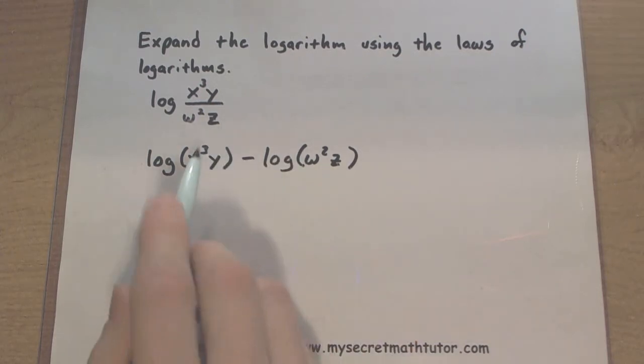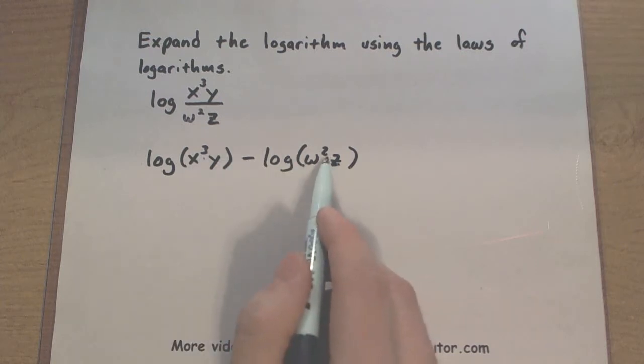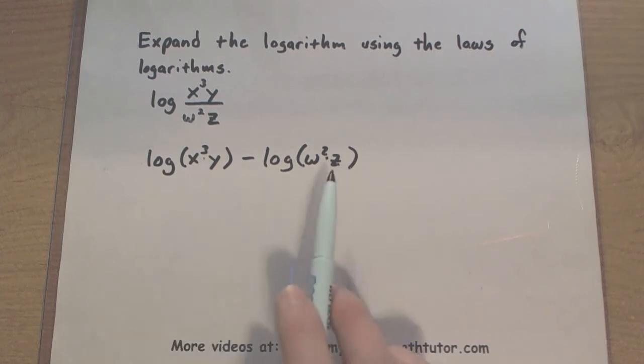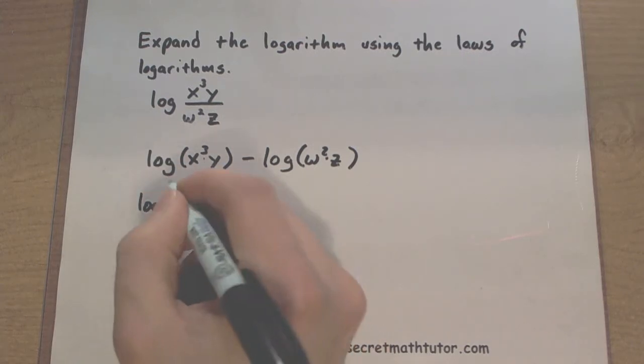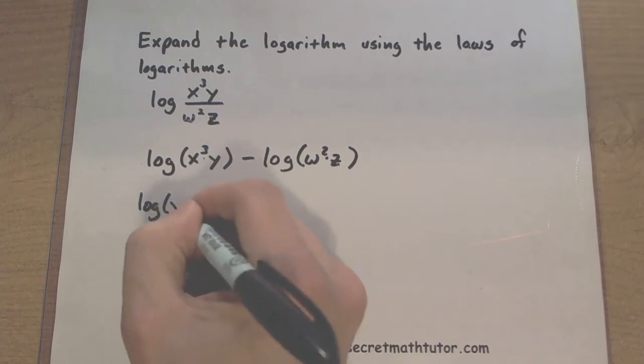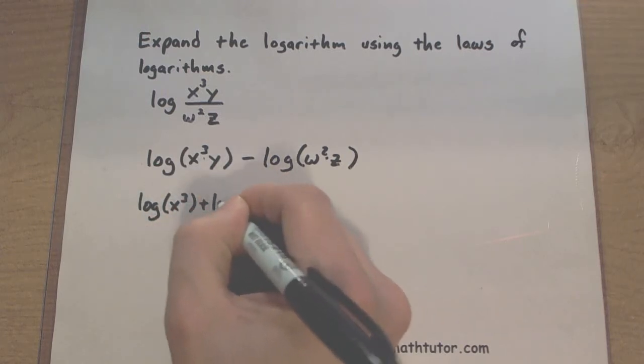Now as we look at these logs the largest feature that I notice inside both of them is basically multiplication. So I have x cubed multiplied by y and w squared multiplied by z. So when this splits up into logarithms it says okay you can split it up into two logs such that they are being added.